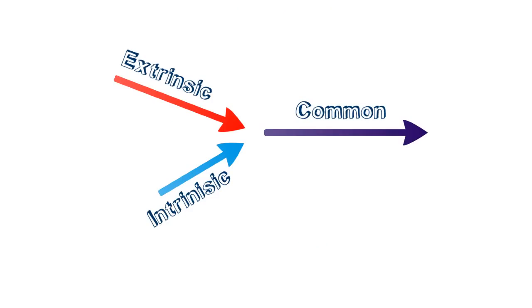How does this measure our pathways? Your PT measures your extrinsic pathway. You can think of it like this: the extrinsic pathway is a very short pathway, so it takes the test with the shortest name. The intrinsic pathway is measured by your PTT — intrinsic is actually the longer pathway with the most factors, so it uses the test with the longest name. And finally, your common pathway is generally measured by your INR.